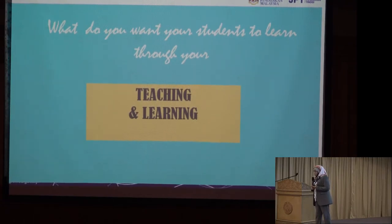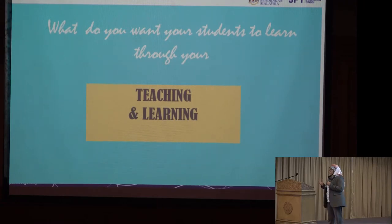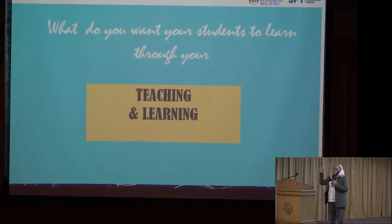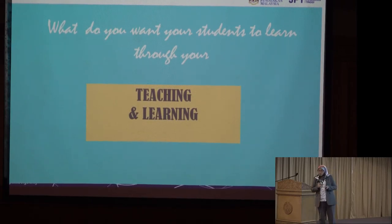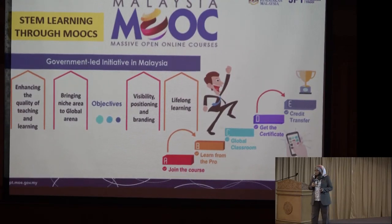Some universities support startups — a spin-off company under the university to commercialize products. For tangible products like this, that's one avenue. But for those in social sciences, your modules, videos, and drawings can also be copyrighted and commercialized. That's where e-learning can be very useful. When we talk about teaching and learning, it involves a broader scope. MOOCs — I was informed you now have 22 MOOCs.